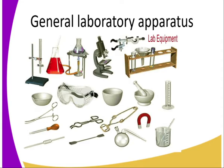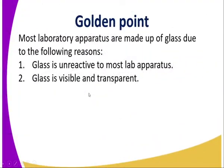Then we have general laboratory apparatus, which may range from a retort stand, a complete stand, clamp and stand. We may have a microscope, vernier calipers, micrometer screw gauge, a pestle and mortar, forks, and tongs. There are several — remember this is general laboratory apparatus — so we will look at each one at a time in the preceding lessons.